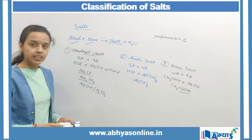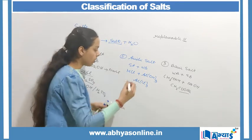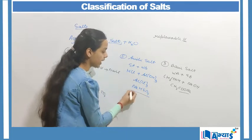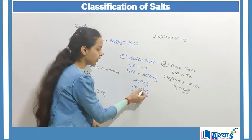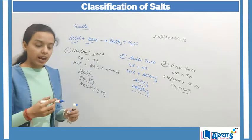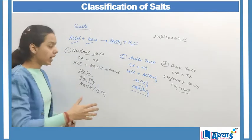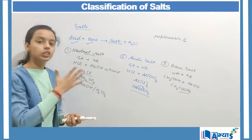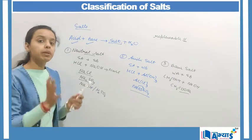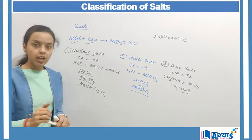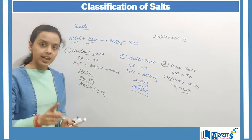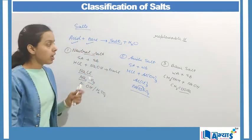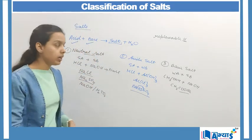Coming on to the acidic salt: if we talk about sodium hydrogen sulphate, NaHSO₄, we can clearly see that we have one hydrogen left that could be replaced. This means the base was not enough to neutralize this hydrogen ion — some hydrogen ion is left — and hydrogen ions come from the acid. That is why sodium hydrogen sulphate is an acidic salt.